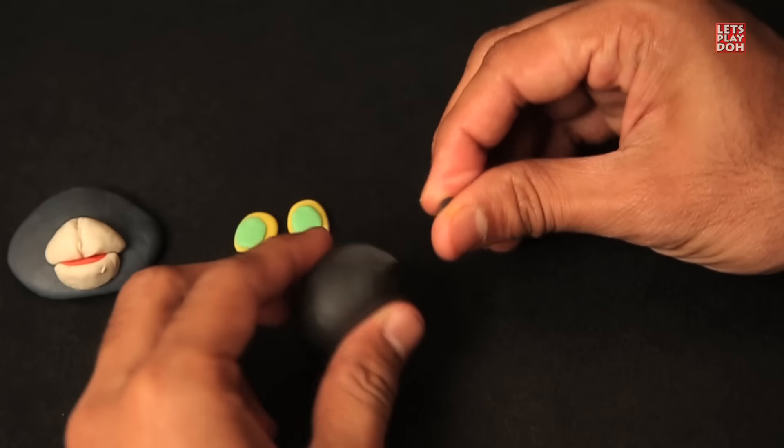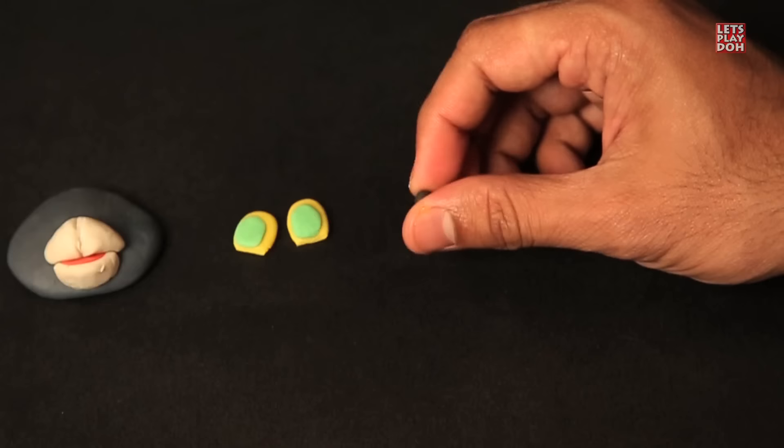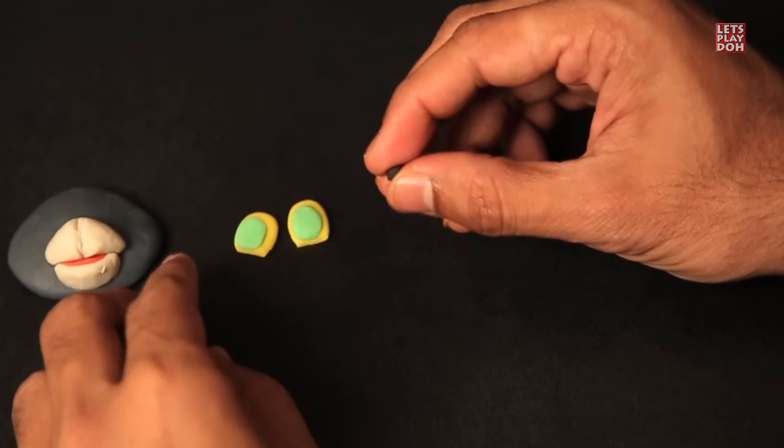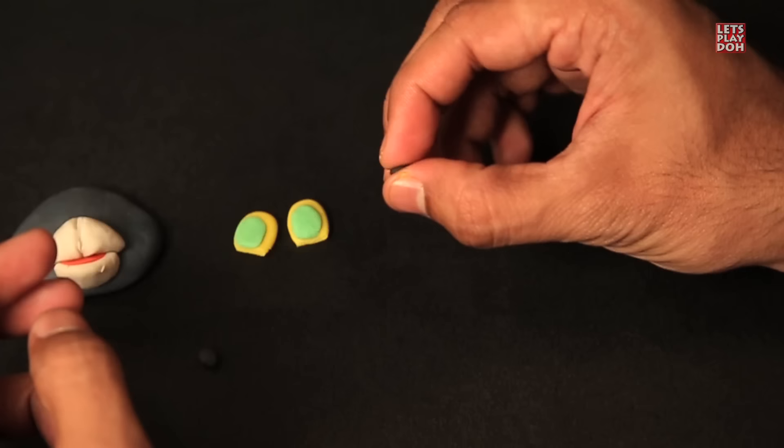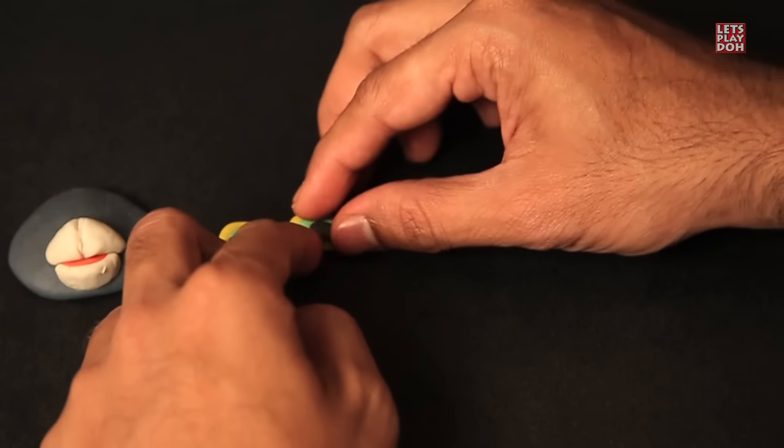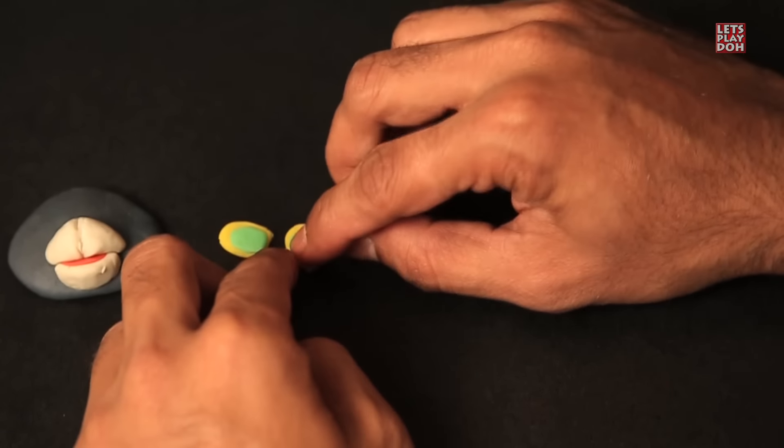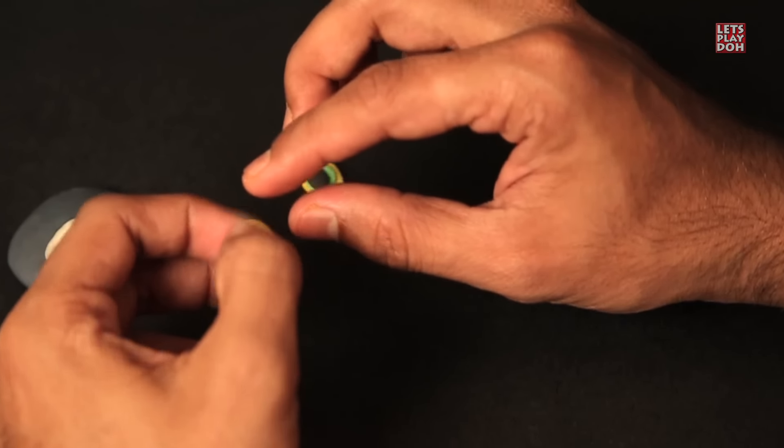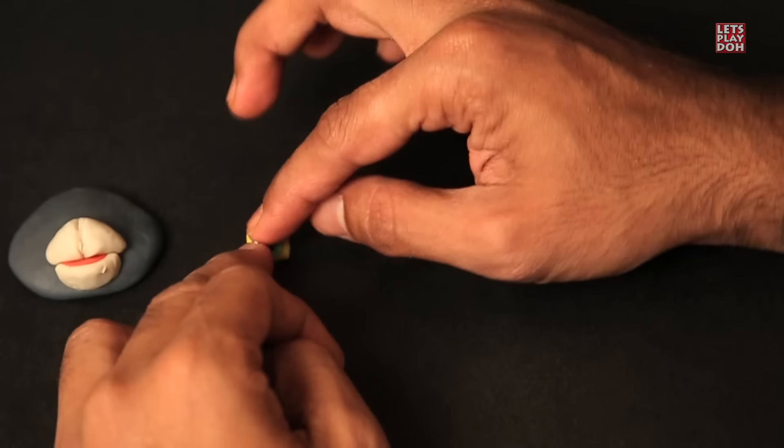Now let's take some black Play-Doh. Here you want to create an even smaller little shape, a small little ball. You want to put that on each of the eyeballs. This is the pupil of the eye. Just put one right in the center of the green. And very important, you want it to match with the other eye. Good job.